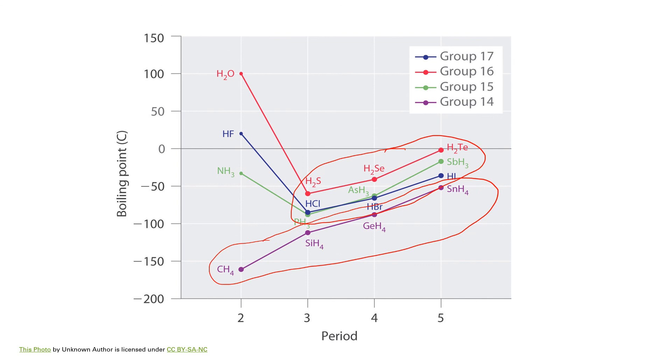But ammonia, hydrofluoric acid HF, and water totally buck that trend. They have much higher boiling points than any other compound that is in that same family. That significantly higher boiling point is the reason why hydrogen bonding gets its own special name. This attraction is so much stronger in these cases.